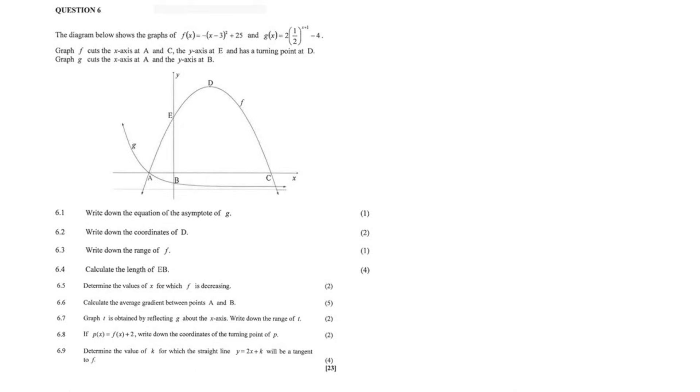In this question, we are given a parabola and its equation, and an exponential graph with its equation. The first one says, write down the equation of the asymptote of g. The asymptote of any graph is shown by this part over here. This graph has moved four units down, so the asymptote would have the equation y equals negative four.